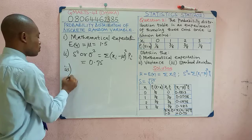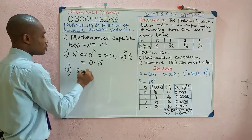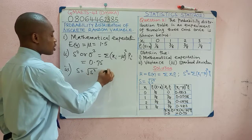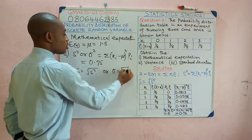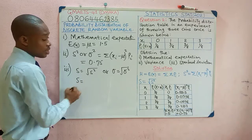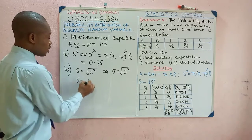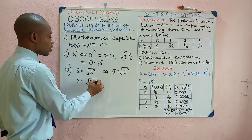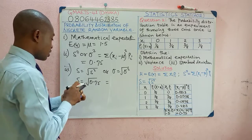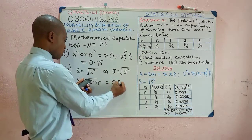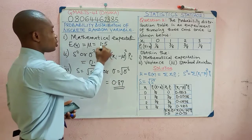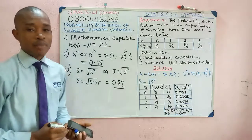We can now obtain our standard deviation, which is the square root of the variance: σ = √0.75. Working that out, we get approximately 0.87. And with that, we've obtained the complete solution to this problem.